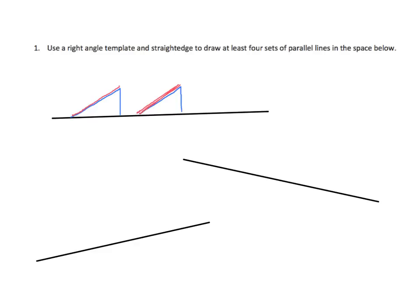You can also orient the triangle in a different way — for example, orient the triangle this way. Take your straight edge, draw your line using the diagonal edge of the triangle, then move the triangle along the straight edge and draw it again. That gives you another pair of parallel lines. You can make one oriented differently as well. Trace that line, move the triangle over, trace again with the right-angle template. You'll need to do this a total of four times, using a variety of templates and orienting your straight edge in various ways.